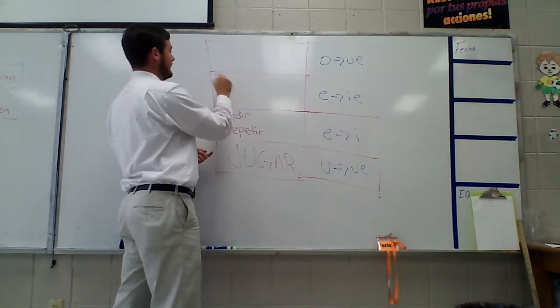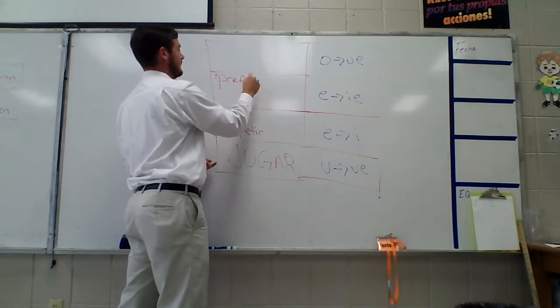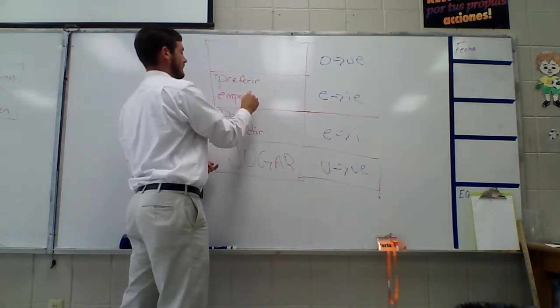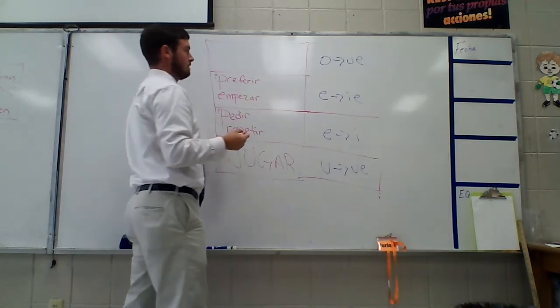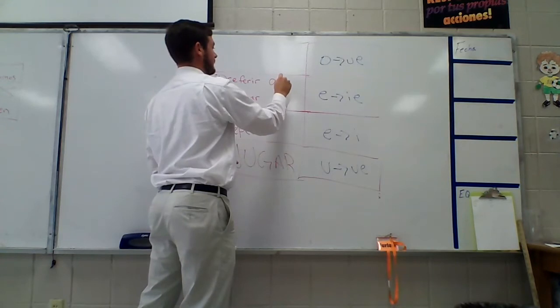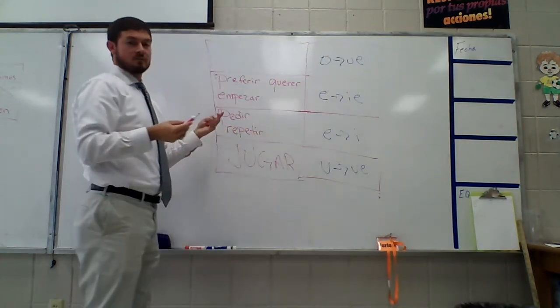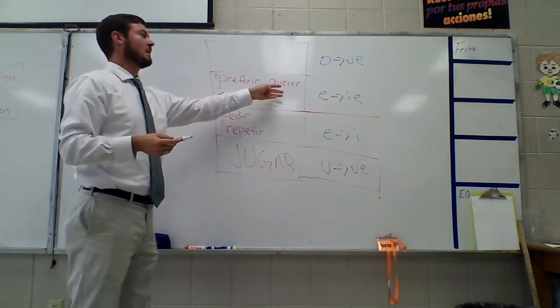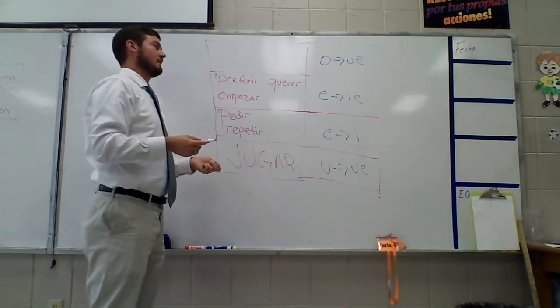For E to IE, we have preferir, empezar, querer. Preferir is what it looks like. It's to prefer. Empezar is to begin. Querer is to want.